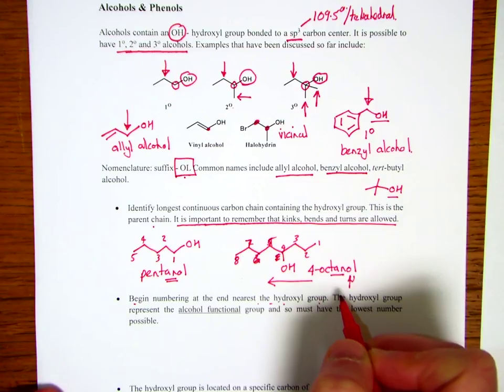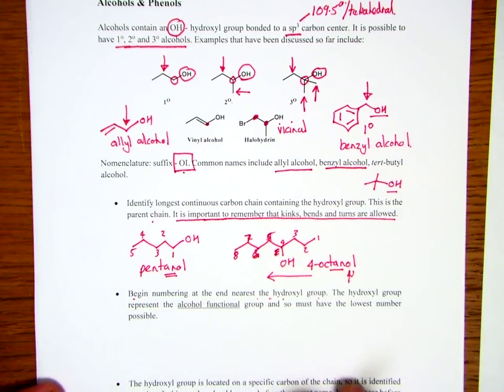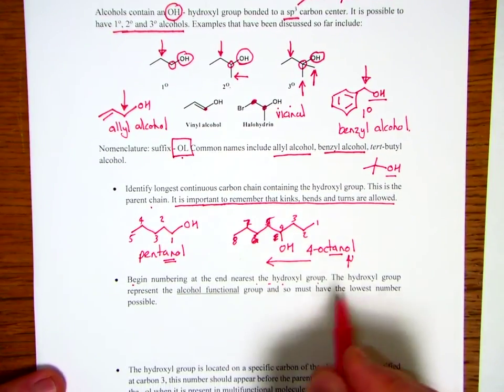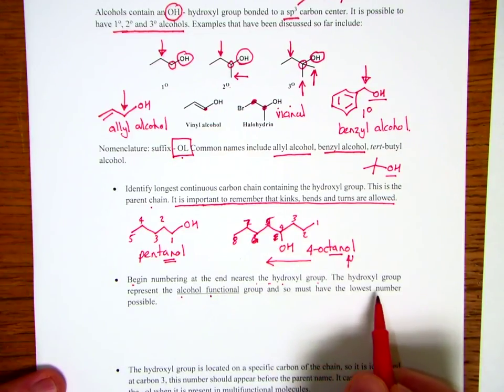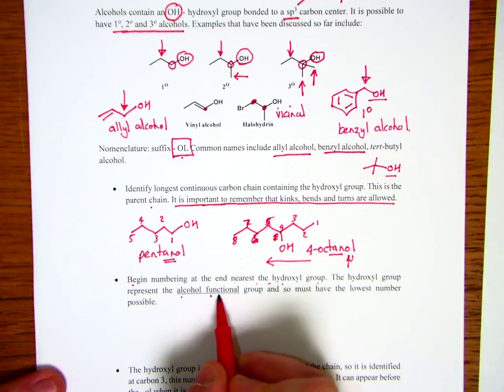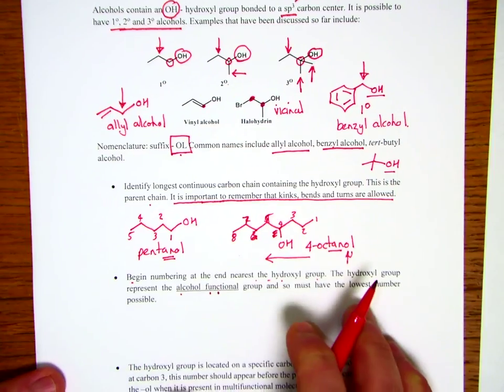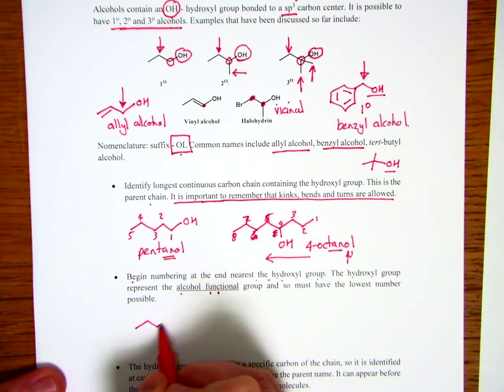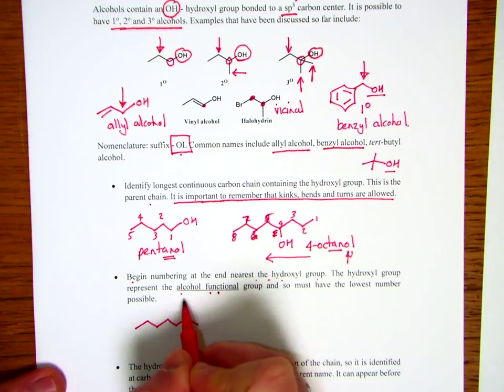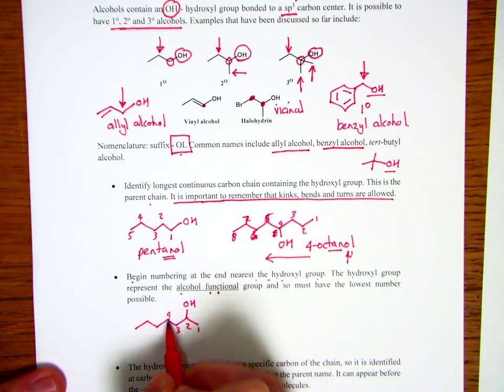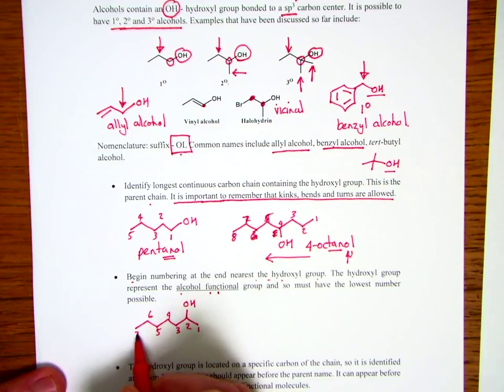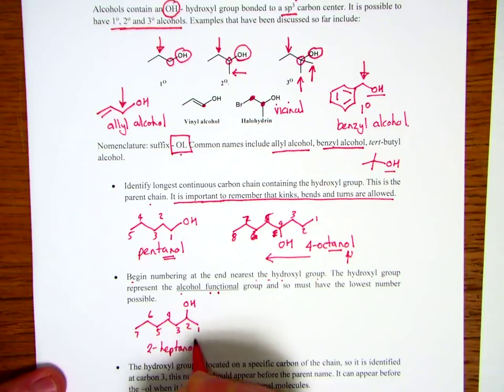If you move a little further down the page, it says begin numbering at the end nearest the hydroxyl group. The hydroxyl group represents the alcohol functional group and so must have the lowest number possible. Remember, we're talking about functionality and functional groups should have the lowest number possible. So if we stick this in, obviously, one, two, three, four, five, six, seven. This becomes 2-heptanol. That's fine. That works very nicely.